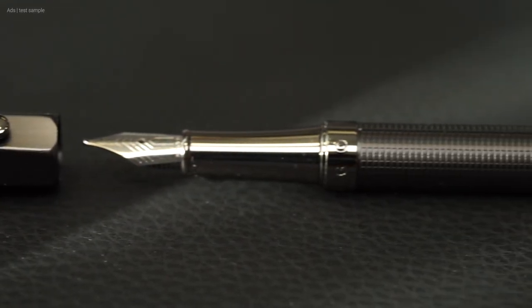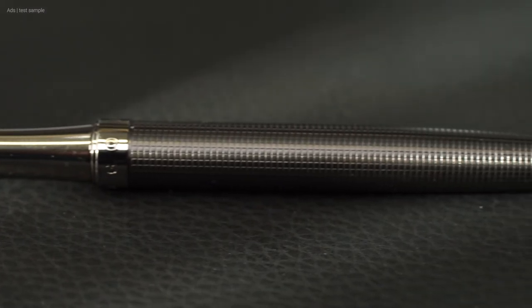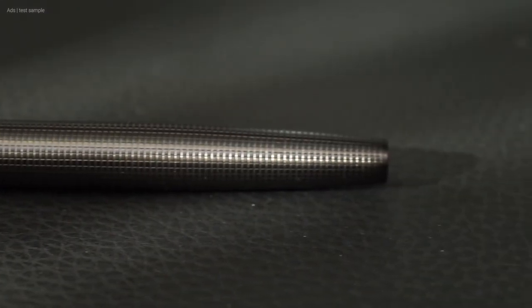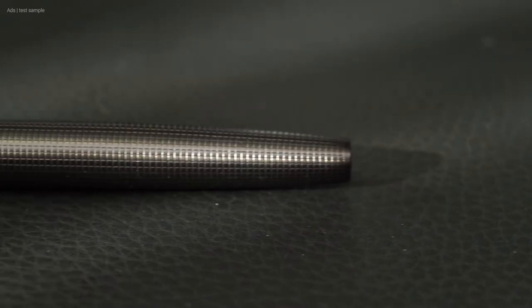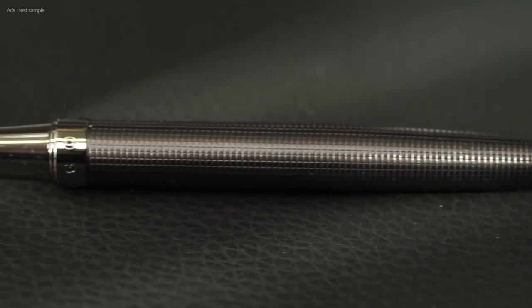The fountain pen is discreet at first glance. The grey exterior is not particularly noticeable. But at second glance, the special features become clear. The twisted cap and the patterned barrel. As mentioned at the beginning, the twist is made of metal.